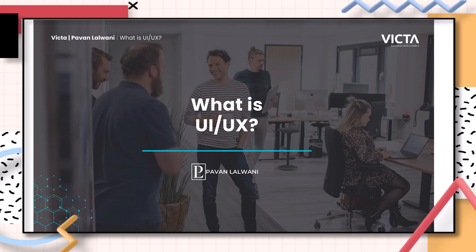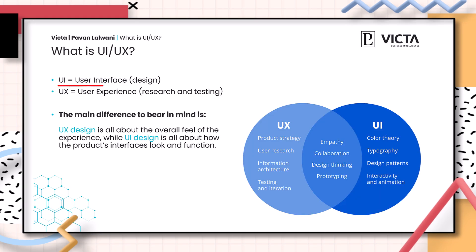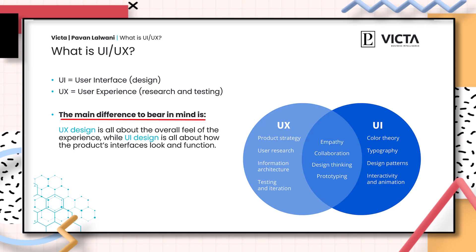The first chapter we will discuss is what is UI UX. UI stands for user interface, which is all about the design of a product. UX stands for user experience, which is all about the experience that the user has with your product. The difference between these two is that UX design, user experience, is all about the overall feel of the experience, while UI design, user interface design, is all about how the product's interface looks and functions.